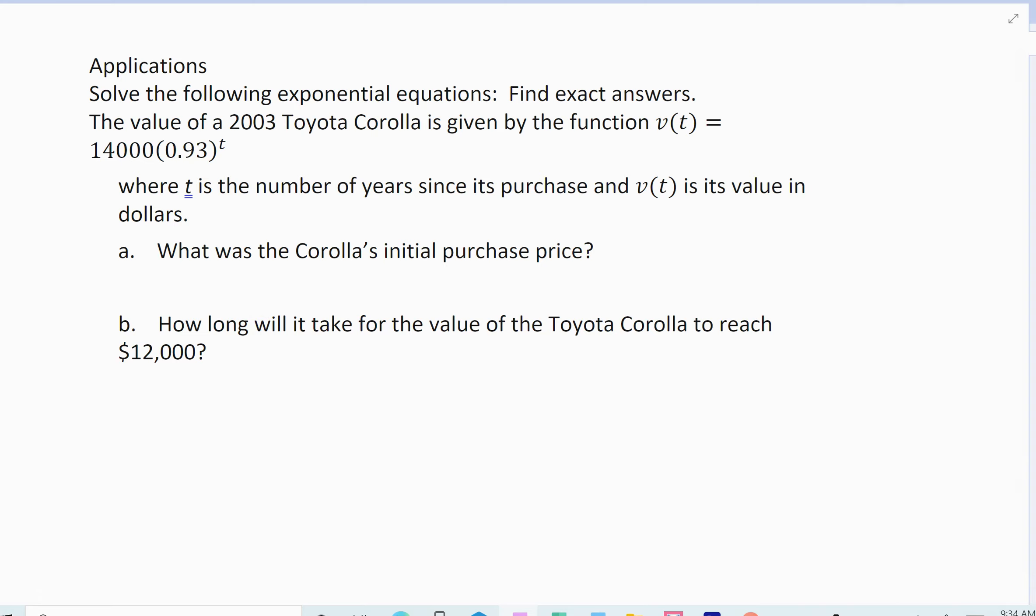So suppose the value of a 2003 Toyota Corolla is given by the function V(t) equals 14,000 times 0.93 raised to the t, where t is the number of years since its purchase, and V(t) is the value in dollars.